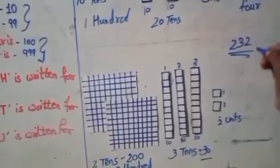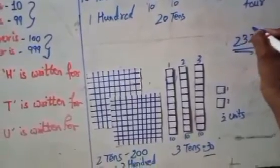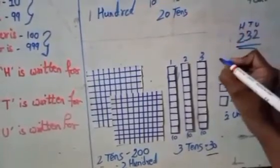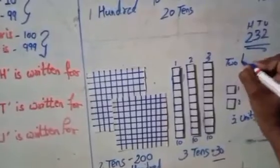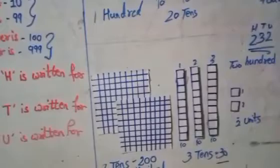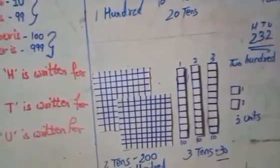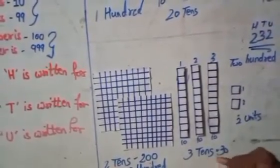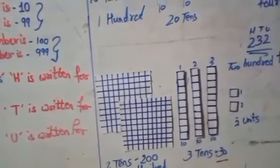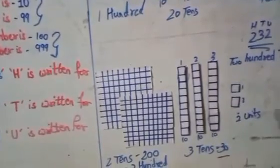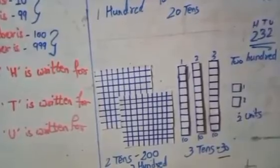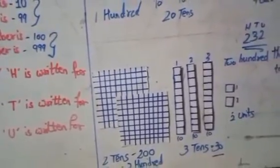So how will you spell 232? First write the hundreds: 2 is in the hundreds place — H-U-N-D-R-E-D. Then 3 is in the tens place, making 30 — T-H-I-R-T-Y. Then the single digit 2. So the full spelling is two hundred and thirty-two, and the answer is 232.